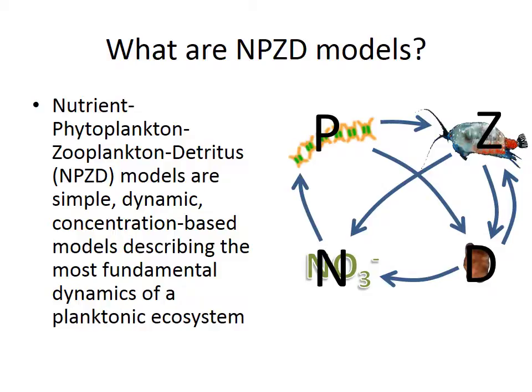You typically start off with a nutrient that gets taken up by phytoplankton. The phytoplankton produces some detritus through phytoplankton mortality, and some of the phytoplankton get consumed by zooplankton. The zooplankton can egest detritus as fecal pellets, or they can excrete nitrogen as nutrients. They can also consume some detritus, and the detritus itself can be remineralized back to nitrogen. So we've got a very simple little ecosystem.